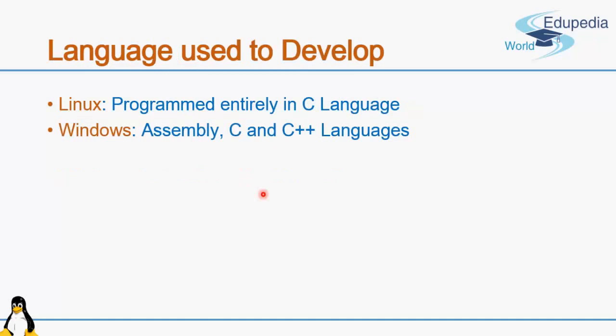Regarding the programming languages used to develop these operating systems: Linux is written entirely in C language — the entire codebase uses one language. Windows, on the other hand, was developed using multiple languages including assembly language, C, and C++.